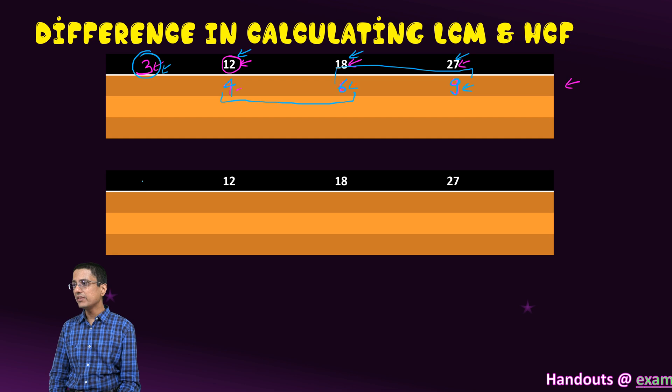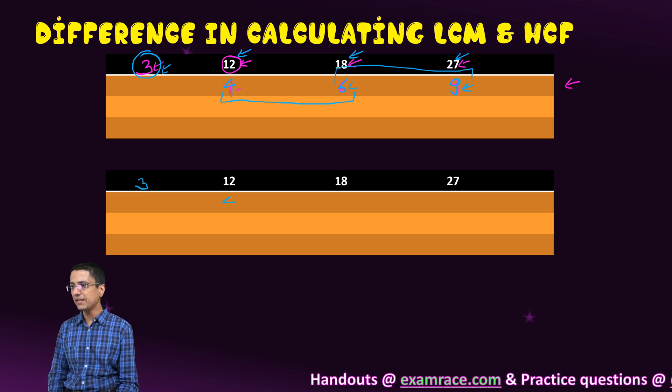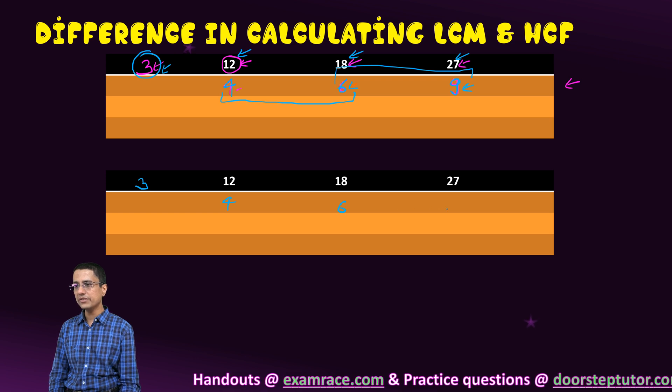For LCM, the first step is the same. So we divide using 3. We get 4, 6, and 9.